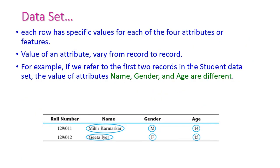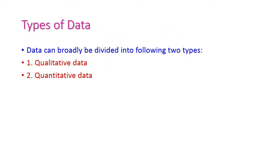Each row has one record, used to represent one student's value. If there are two records, then we have two different students' values — meaning the record values are different. Now let us see the different types of data. Data is mainly divided into two types: first is qualitative data and second is quantitative data. These two types of data are entirely different.